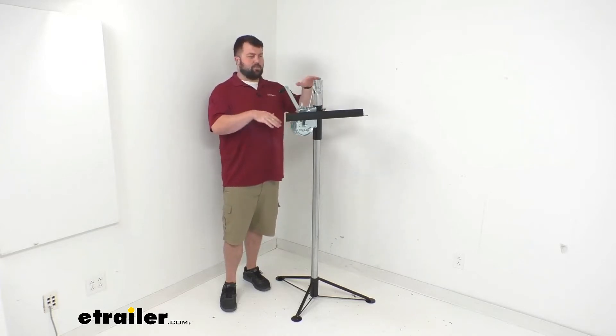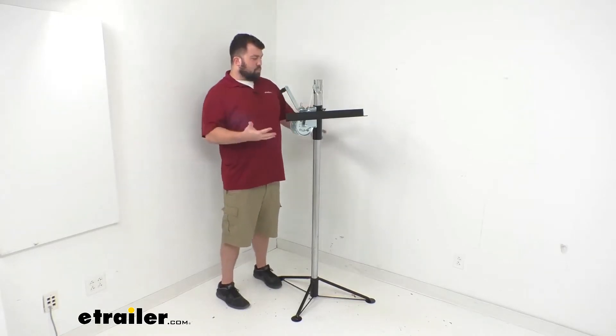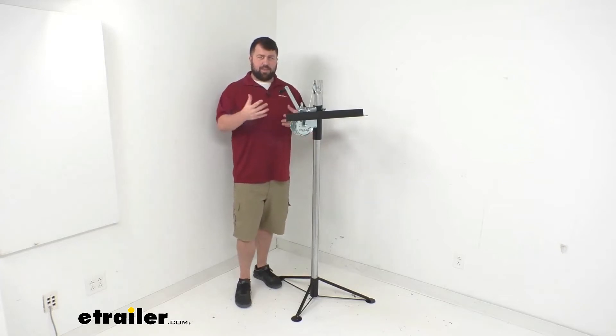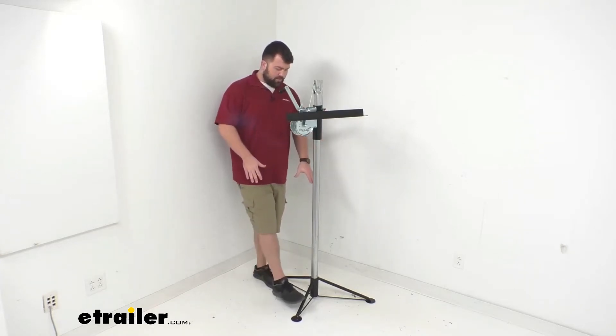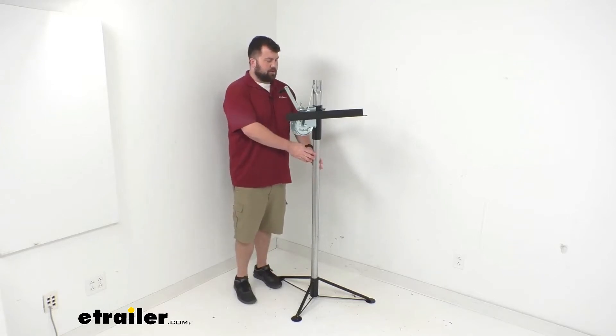The overall height when assembled is about 63 inches. This is a portable design so it can be disassembled into three different pieces. You've got your foot piece here, your upright pole and then your bracket here, your lift bracket. So those three can be disassembled for storage or transport.